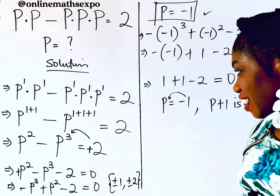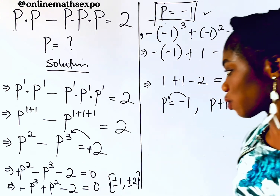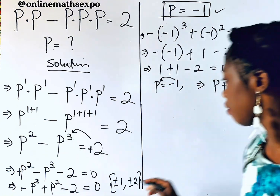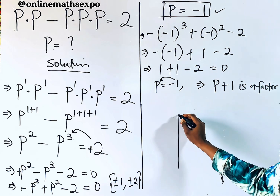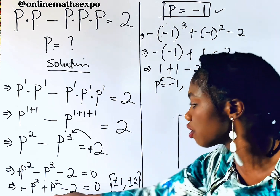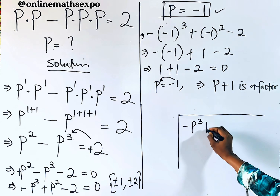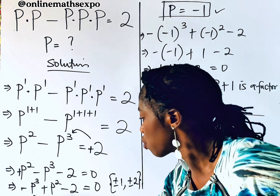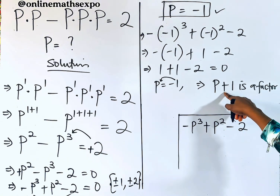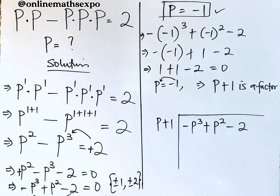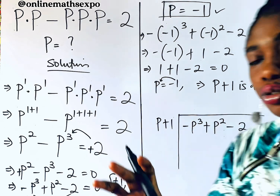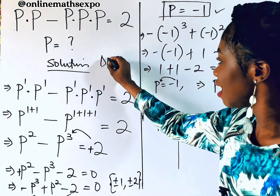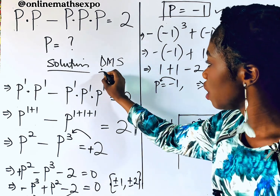For the long division: draw your line, put the equation −p³ + p² − 2 inside, and use the factor (p + 1) as the divisor. The rule for long division is DMS: Divide, Multiply, Subtract — this will guide each step.